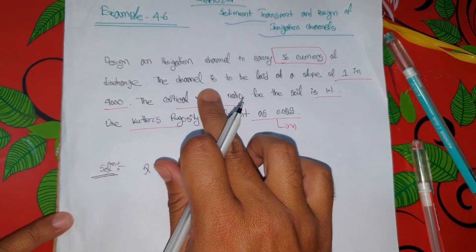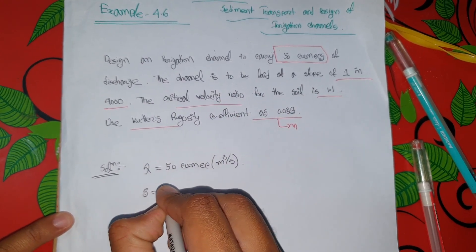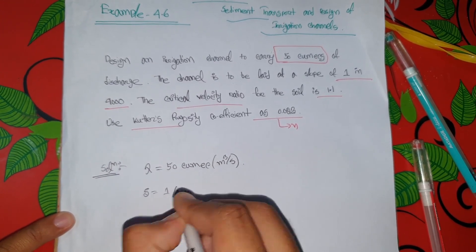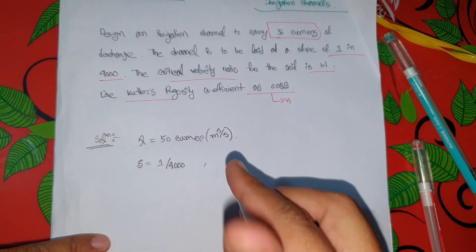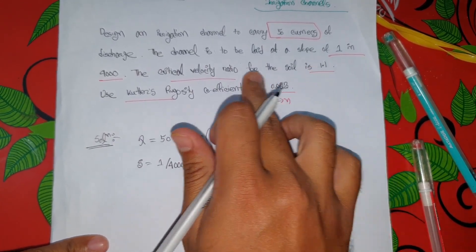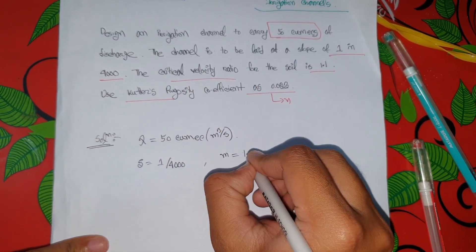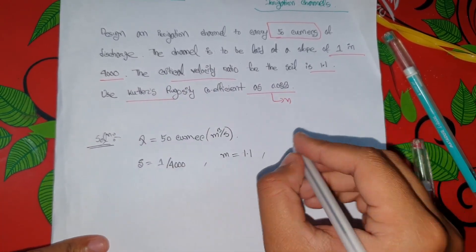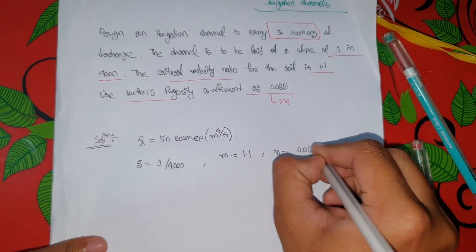The slope S is 1 in 4000, i.e., 1 by 4000. The critical velocity ratio m is 1.1. The rugosity constant n is 0.023.